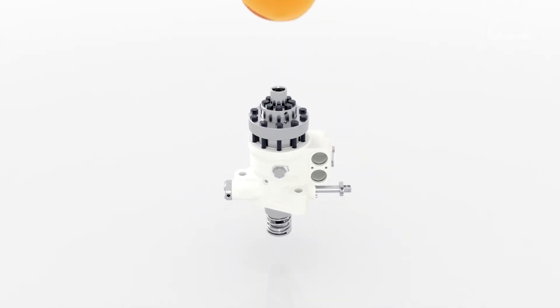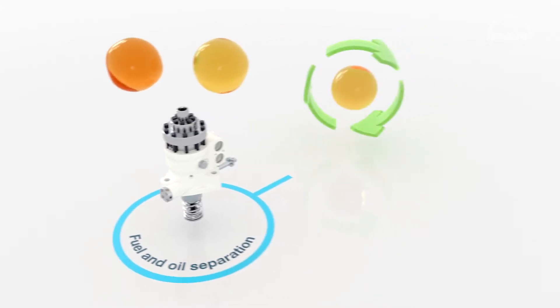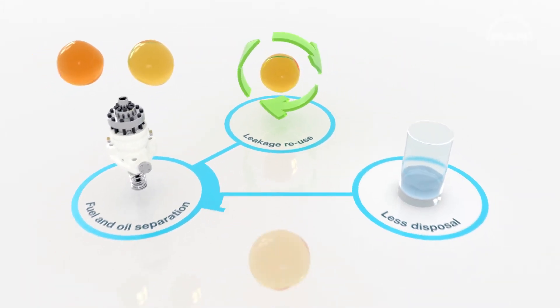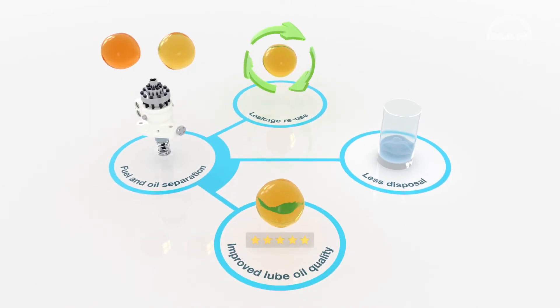The MK3 injection pump separates fuel and oil, and therefore it enables fuel oil leakage reuse, minimizes the needs for sludge disposal, and improves the lube oil quality.